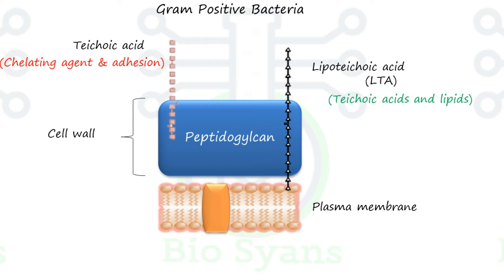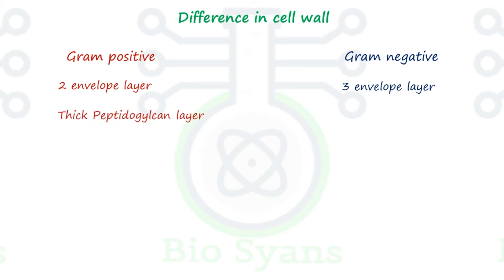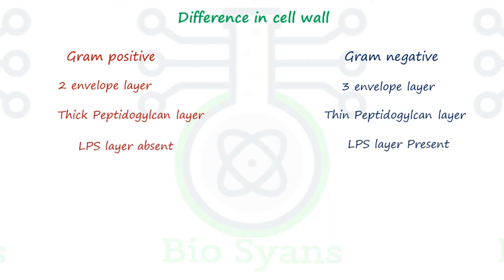Now let's see the differences in the cell wall between gram-positive and gram-negative bacteria. Gram-positive bacteria have two envelope layers: the cytoplasmic membrane and the peptidoglycan layer. Gram-negative bacteria have three layers: an outer membrane, a peptidoglycan layer, and a cytoplasmic membrane. Gram-positive bacteria have a thick peptidoglycan layer whereas gram-negative bacteria have a thin peptidoglycan layer.